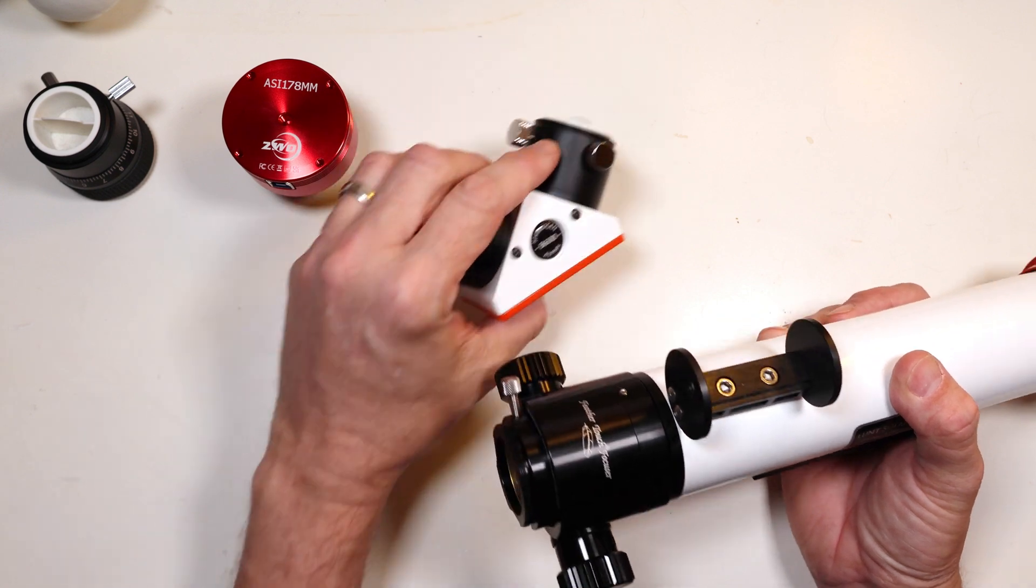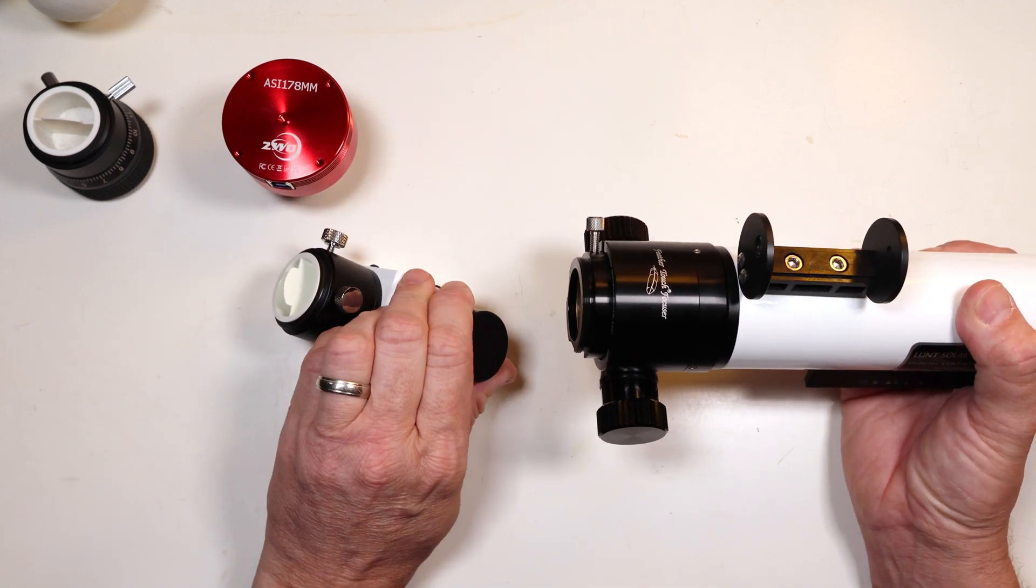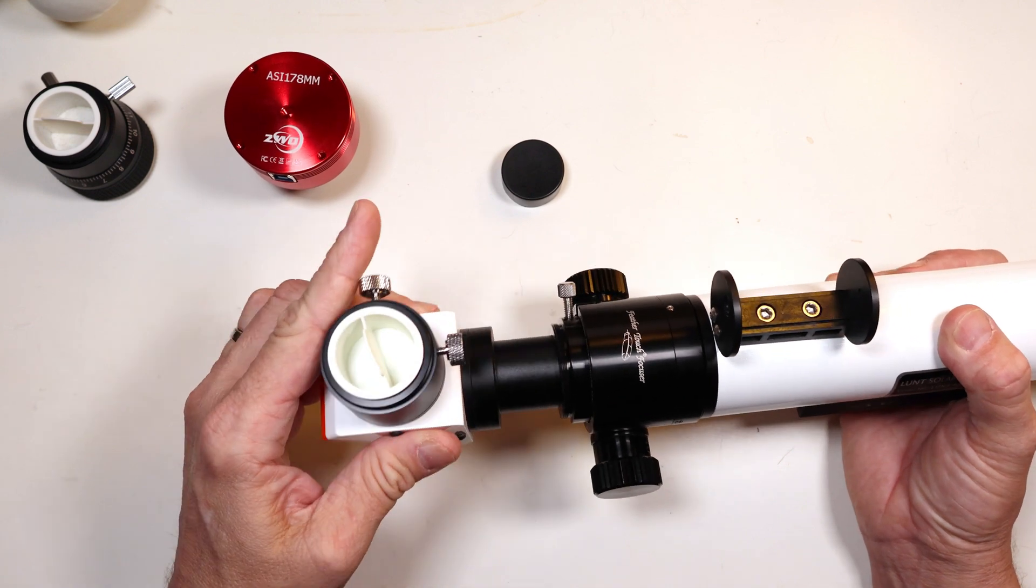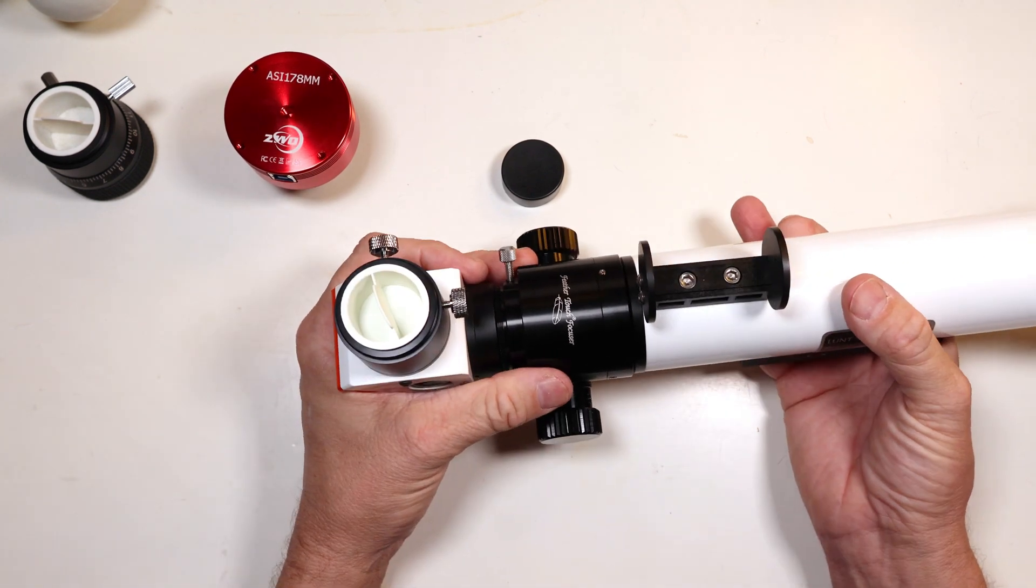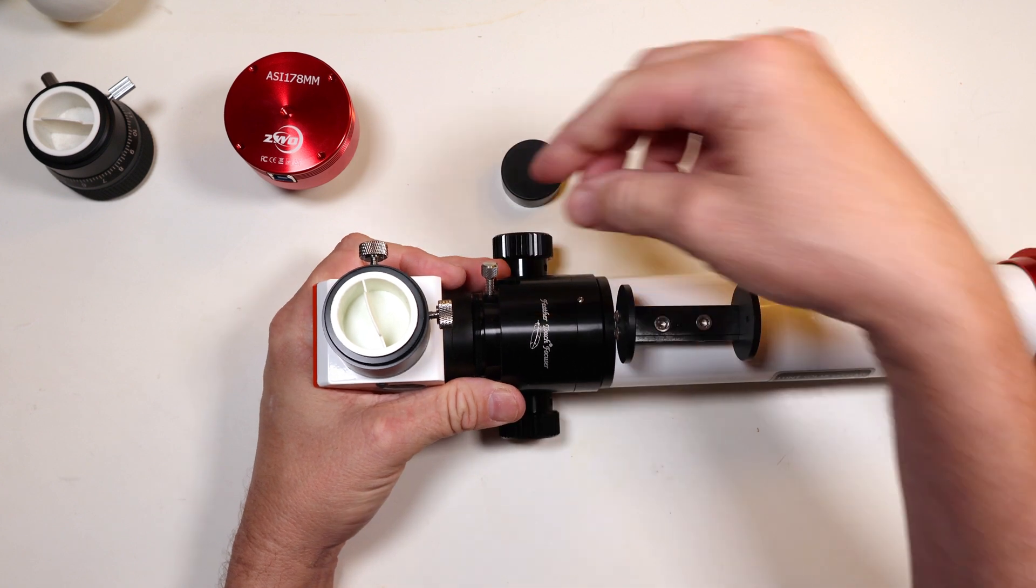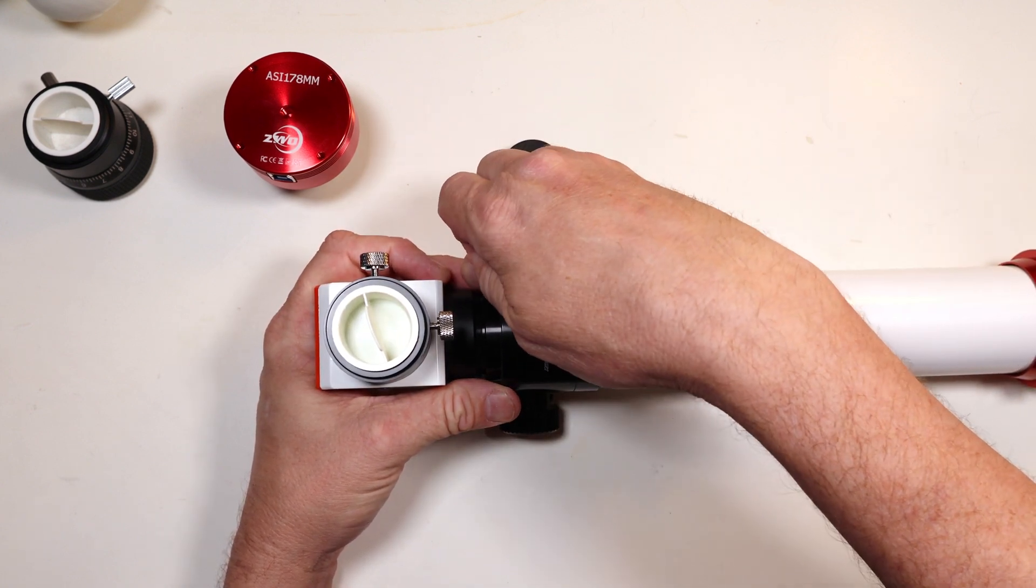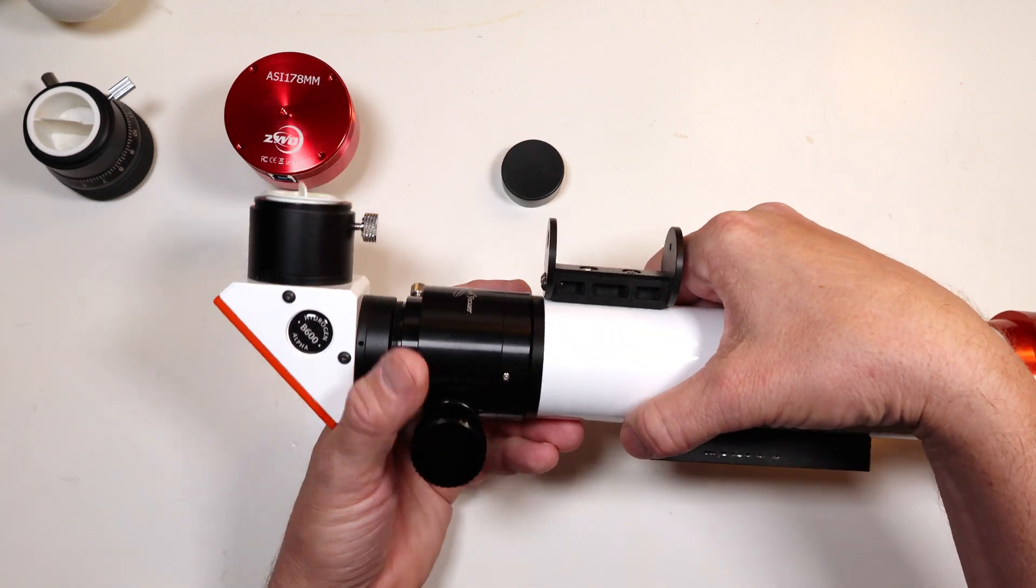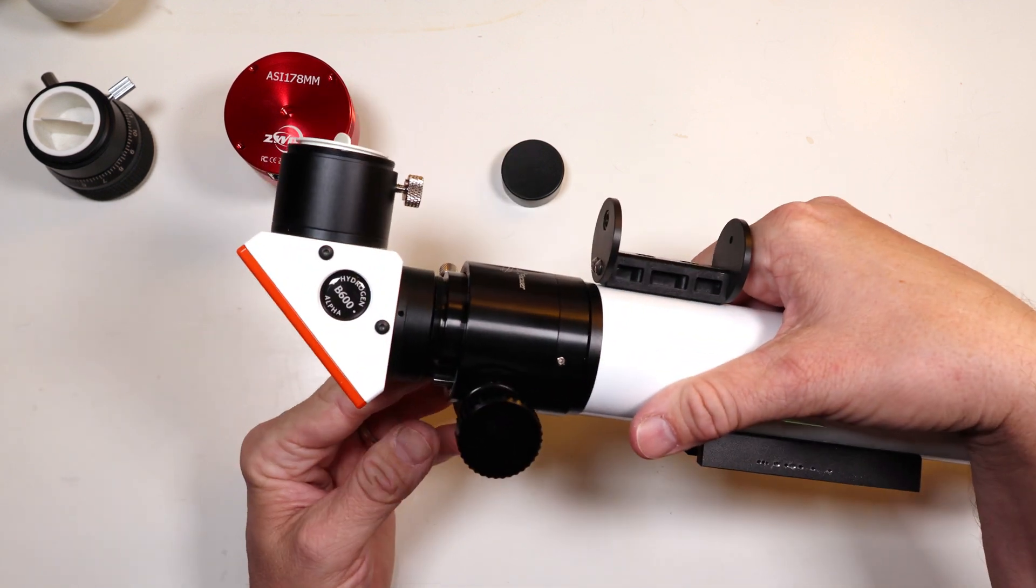Next, I'm going to replace my diagonal back on the draw tube at the end of the Feather Touch Focuser. I'm going to set this down and make sure that this is nice and tight and it does not flop over. And that is it.